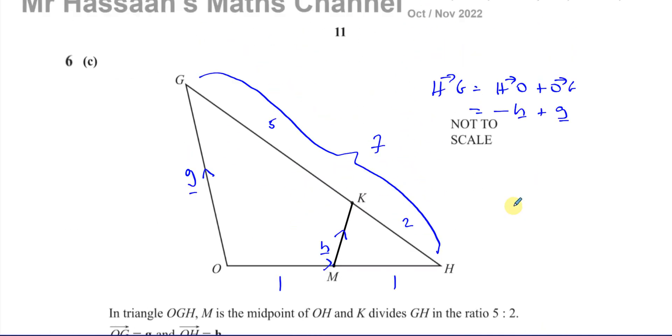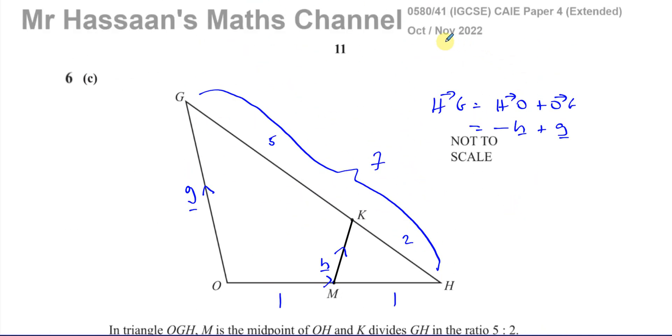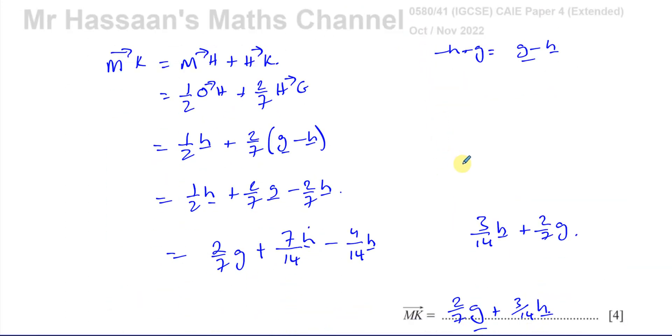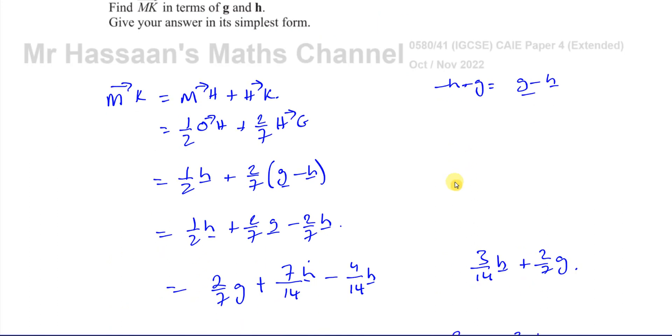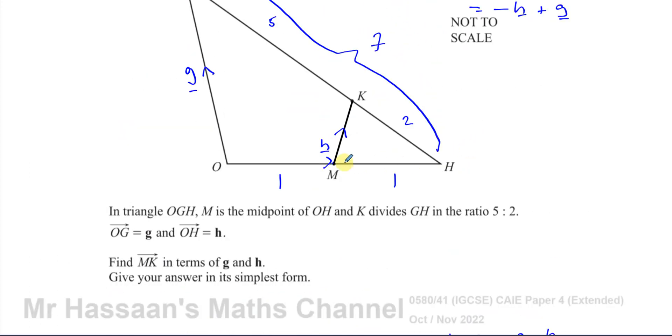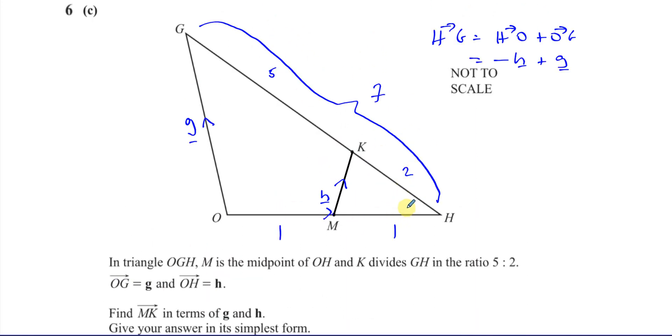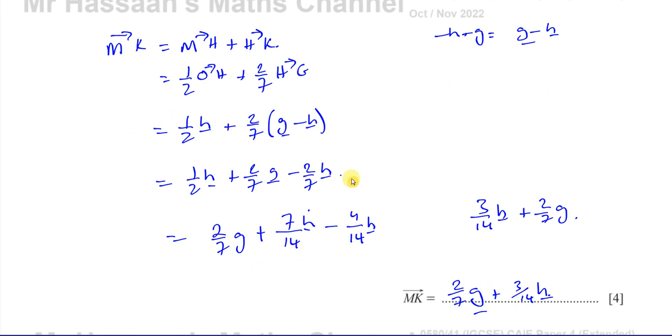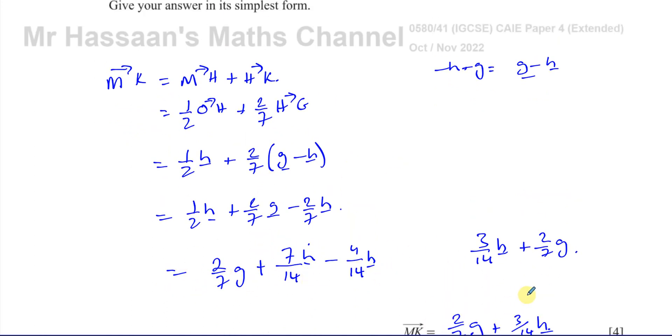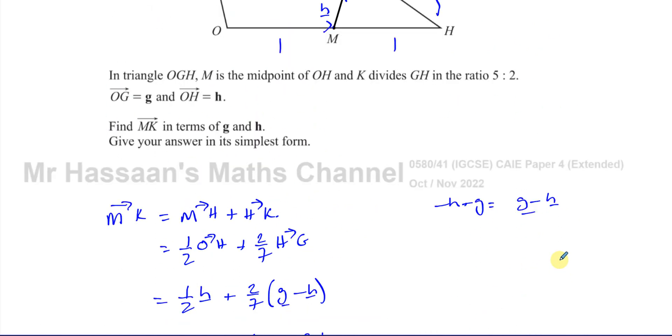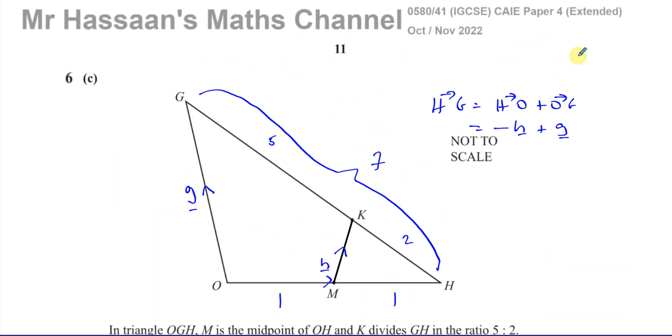And that concludes this question. Question number six, part C from the October-November 2022 paper. Question all about vectors. Part C here about vector geometry. So we have to basically find MK in terms of h and g. And we did that just using these ratios that they gave us. And we must simplify our answer. Other questions from this particular paper can be found in the playlist. Other questions from this topic of vectors from IGCSE in this region here. And you can subscribe to my channel by clicking on this link. Thank you for watching and see you soon.